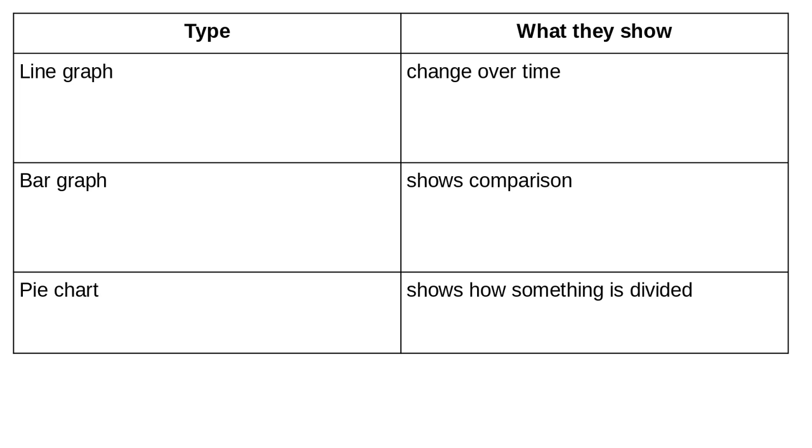An example of a line graph might be your height throughout your lifespan. You grow taller and taller and taller, and then when you're a grown-up, you shrink just a little bit.